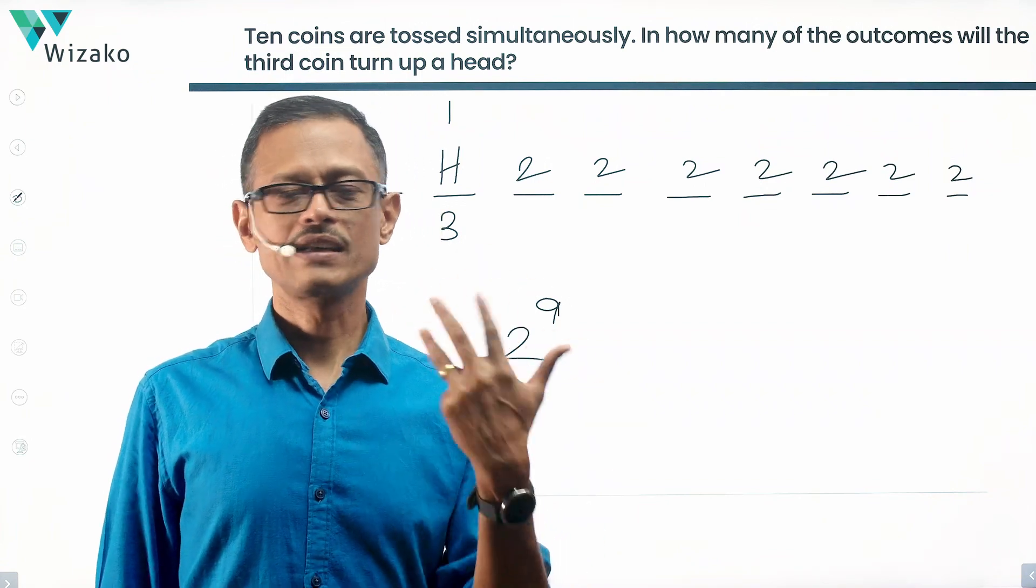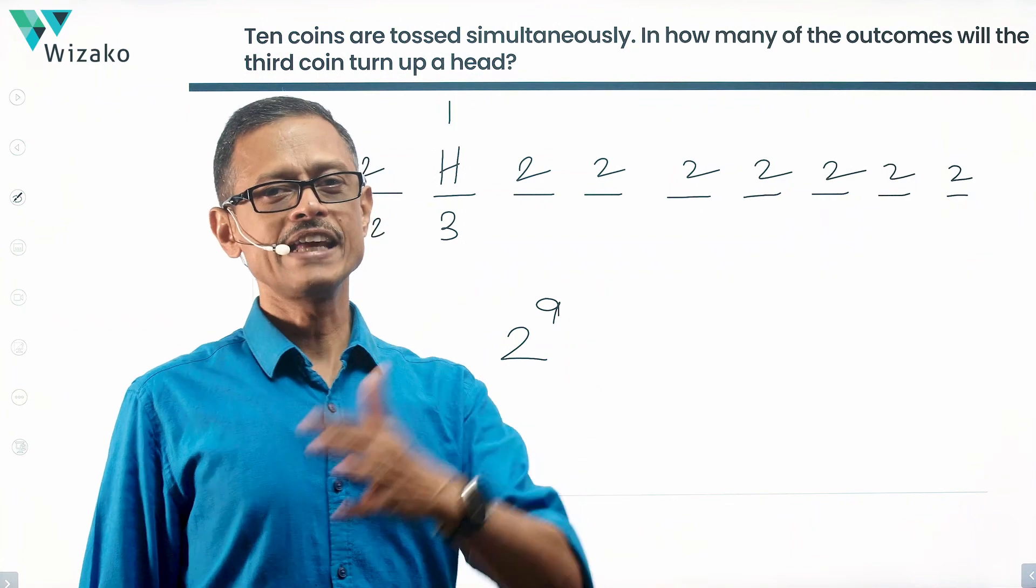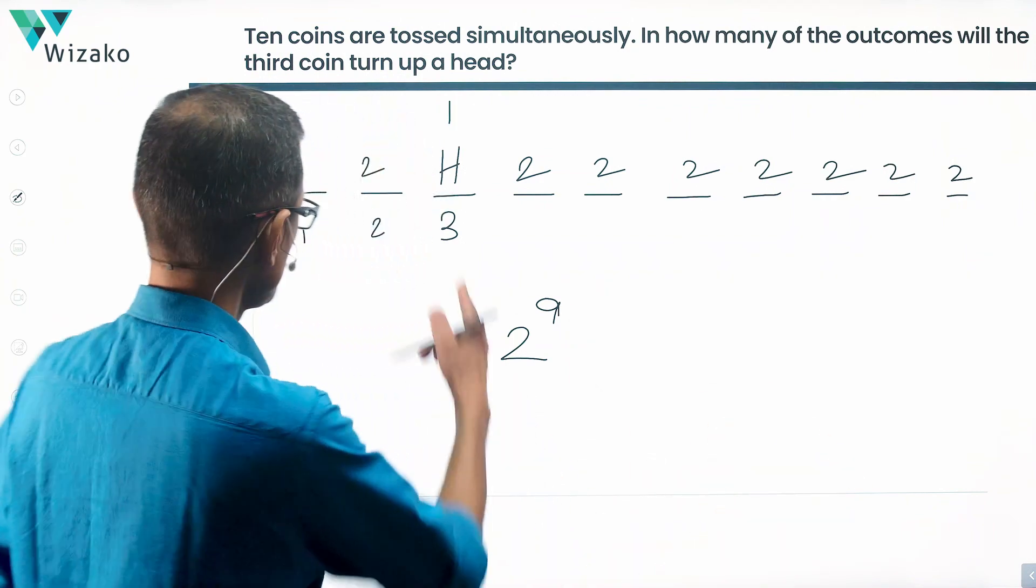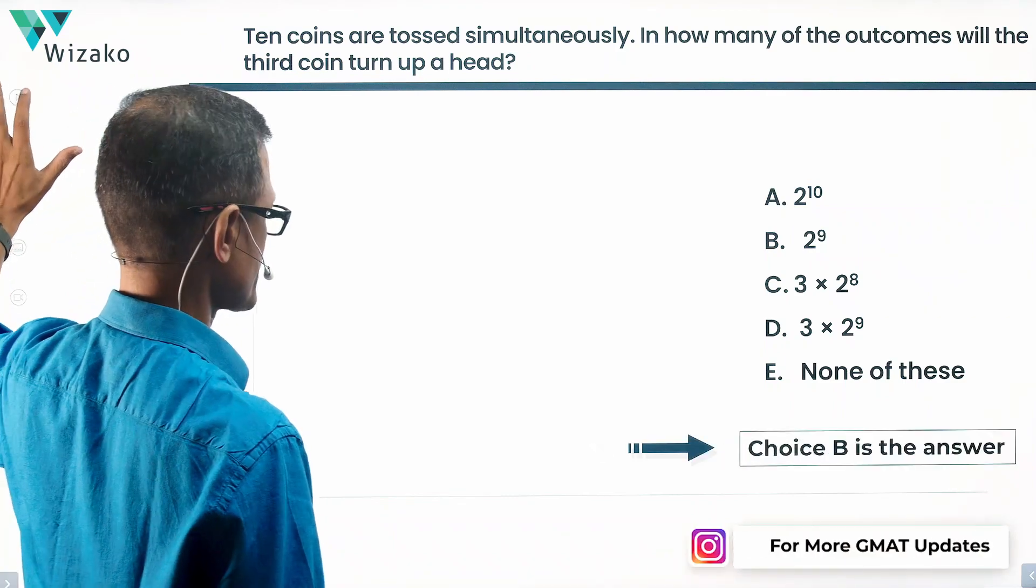And I'm not bothered about the others. I'm absolutely okay with the remaining coins being head or tail in whatever way they choose to come up. So 2 power 9 is the correct answer. Choice B is the correct answer to this question.